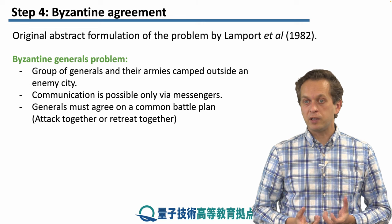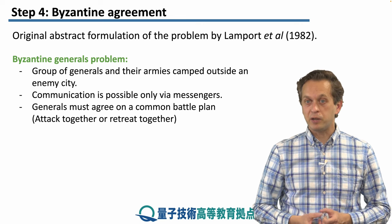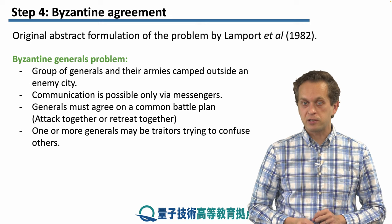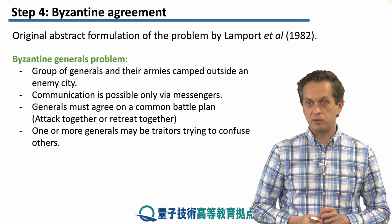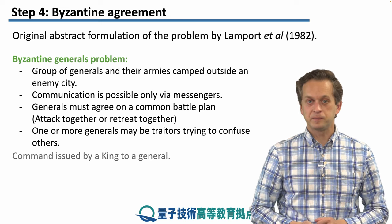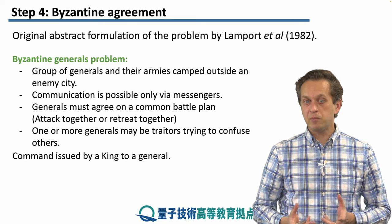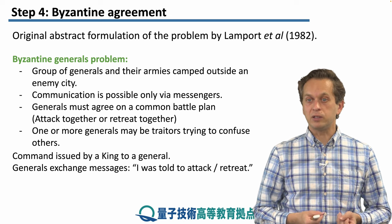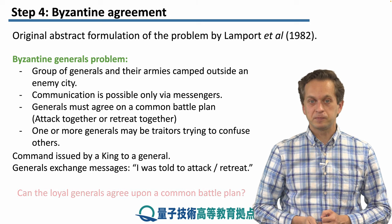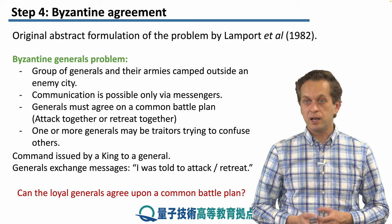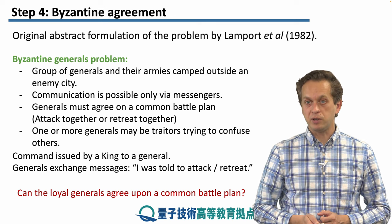For example, a single general attacking the city may be defeated, but a group of them may actually conquer the city. There is one or more generals that are traitors, and these traitor generals are trying to confuse the others by giving conflicting information about whether to attack or whether to retreat. The command is issued externally by a king to a general, and the generals exchange messages of the form 'I was told to attack' or 'I was told to retreat.' The question is: can the loyal generals agree upon a common battle plan despite one or more of the generals being traitors?